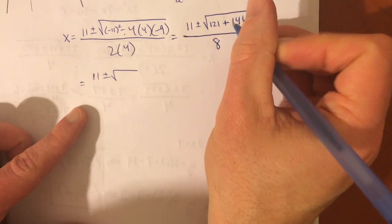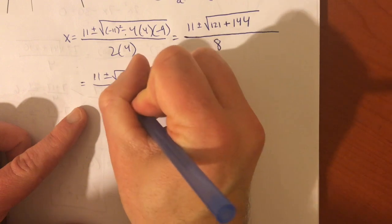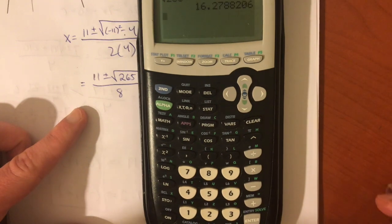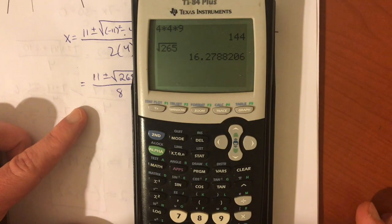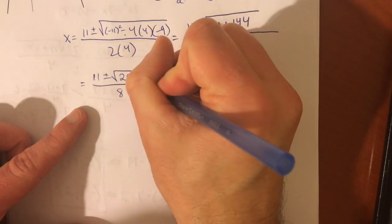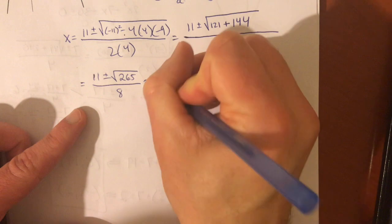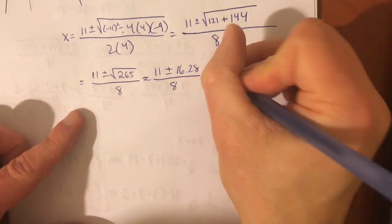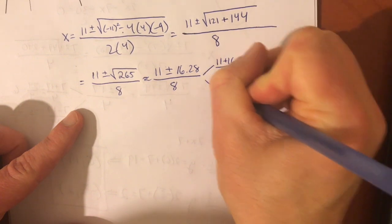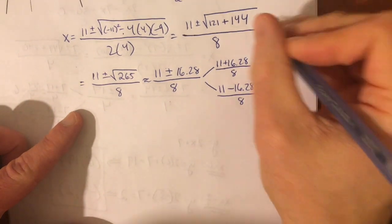121 plus 144. That is going to be 265. And, 265 is not a perfect square. We get about 16.28. That's approximately 11 plus or minus 16.28, all divided by 8. And, just be careful handling that plus or minus. It's two separate values. 11 plus 16.28 over 8. 11 minus 16.28 over 8.